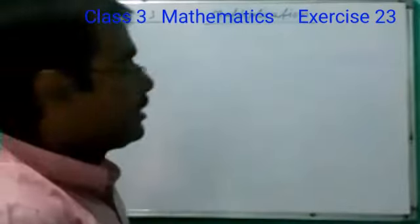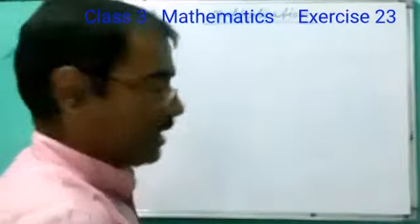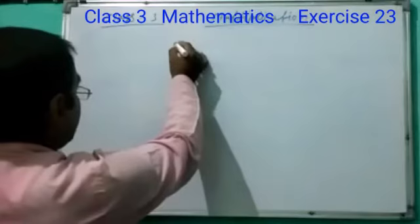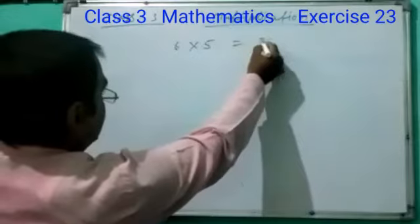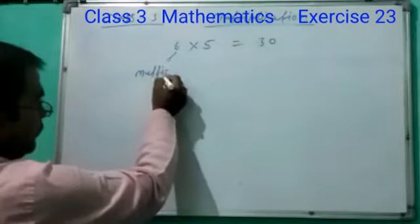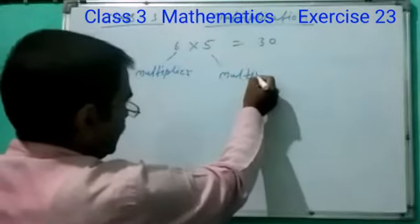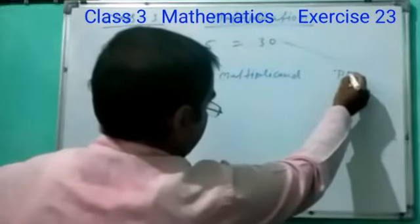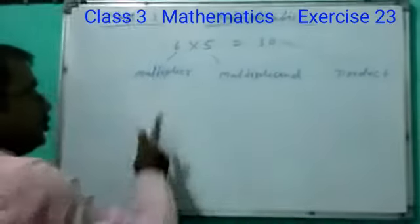In multiplication, we find the product of multiplier and multiplicand. What is multiplier and what is multiplicand? There you see. Let 6 into 5 equal 30. Here 6 is multiplier and 5 is multiplicand, and 30 is product. All this is used in multiplication.